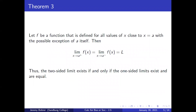Let f be a function defined for all values of x close to x equals A, with the possible exception of A itself. Then the limit as x approaches A from above of f(x) equals the limit as x approaches A from below of f(x) equals L. Thus, the two-sided limit exists if and only if the one-sided limits exist and are equal.